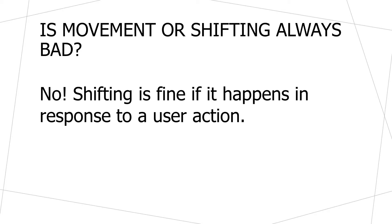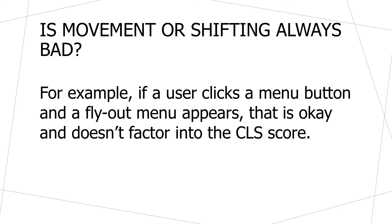Not all shifting is necessarily bad. Shifting is fine if it happens in response to a user's actions. For example, if somebody clicks on a menu button and a flyout menu appears listing more options, that doesn't factor into the CLS score because that layout shift was expected. Cumulative layout shift is really trying to look at unexpected layout shifts, especially those that could disrupt how people are using the website.